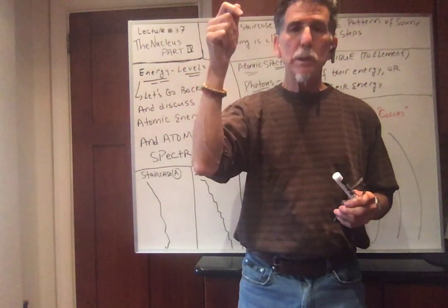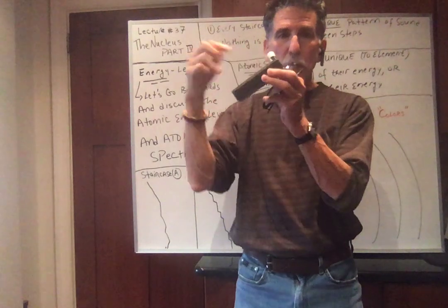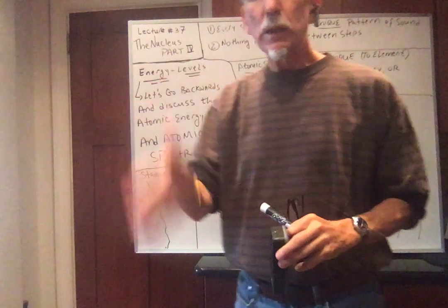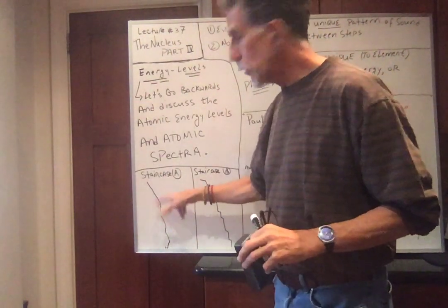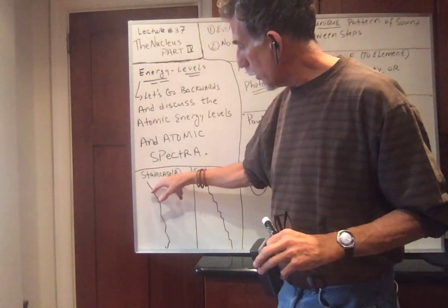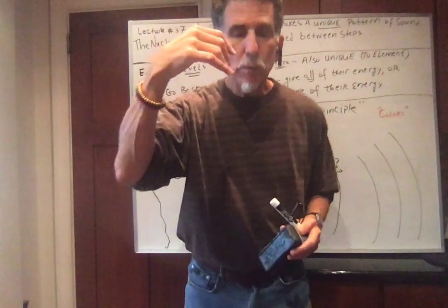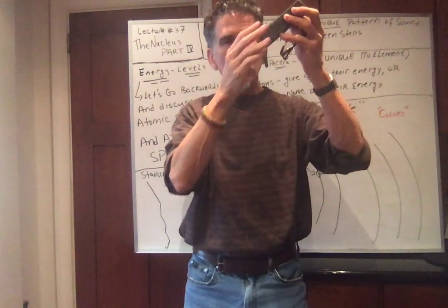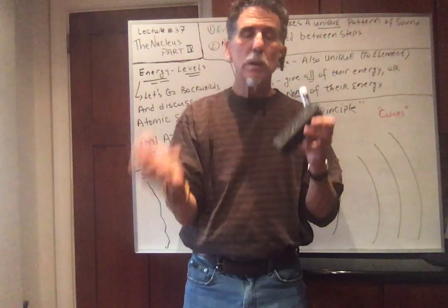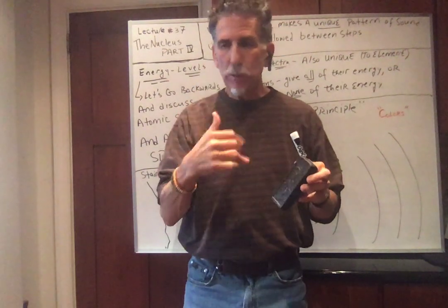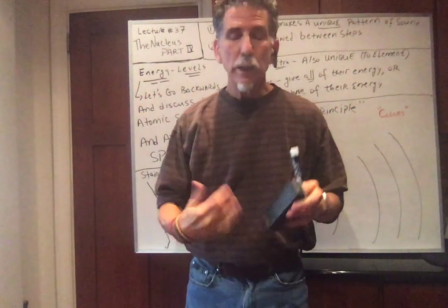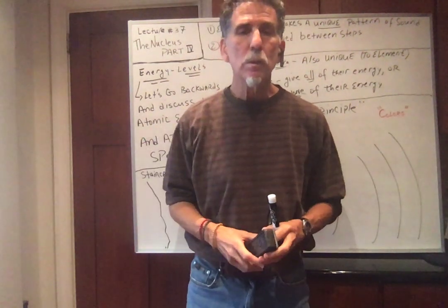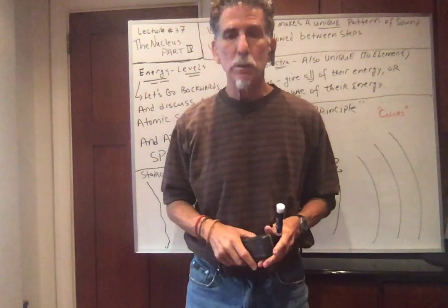Now suppose I throw a ball up these steps. Well, if the step is on an angle, clearly it's not stable and it will fall down. And clearly the ball cannot be between the steps — that's my rule. So if I make staircase A and it has a certain pattern — uneven, long steps, short steps, all crooked — what happens is if I throw a ball up there, it makes a pattern of sound. If I close my eyes and hear that pattern, I always know that's staircase A.